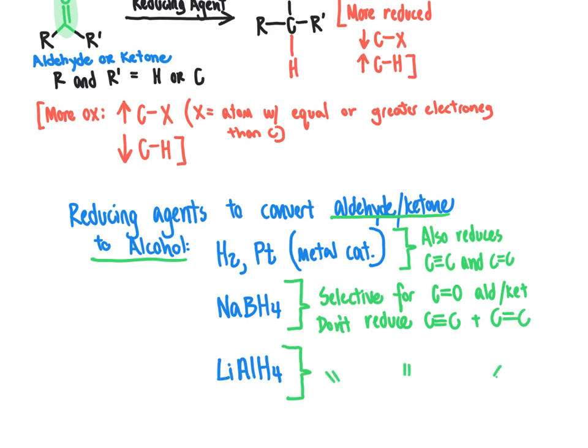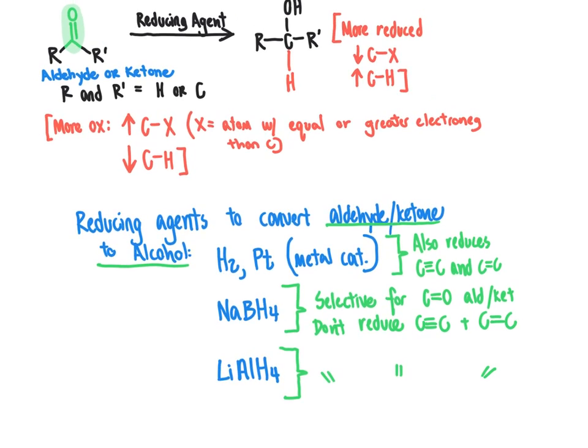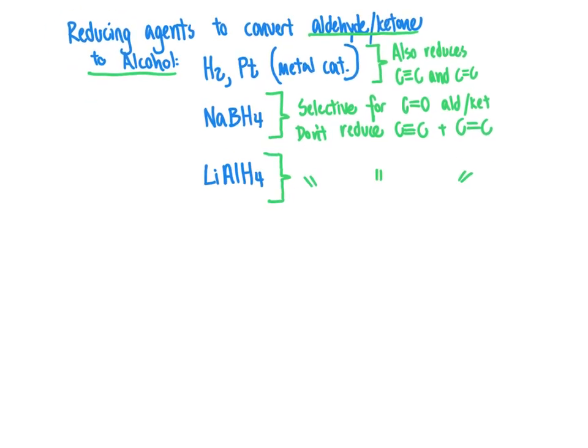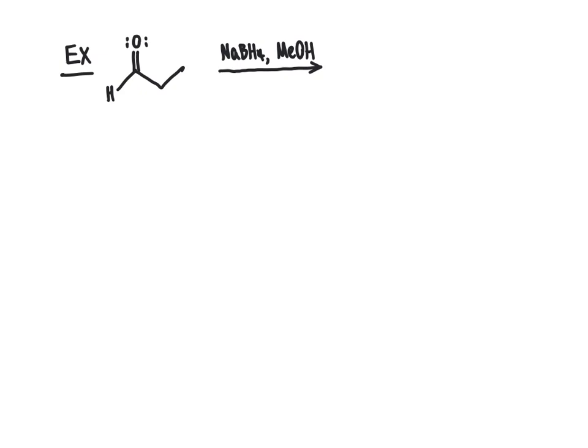If your goal is to take a molecule with multiple functional groups and only reduce the carbon-oxygen double bond and not the carbon-carbon double bond, you want to use sodium borohydride or lithium aluminum hydride. Let's take a look at the mechanism for the reaction of NaBH4 or LiAlH4 with an aldehyde or ketone. We'll do an example problem using sodium borohydride as our exemplar, taking a three-carbon aldehyde reacting with sodium borohydride in methanol.